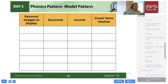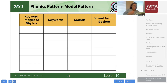Today we are reviewing how to read and spell words with the AI, AY, OI, OY, AU, and AW vowel team patterns. The letters Y and W become part of a vowel team when they team up with vowels A or O. Words with the vowel team pattern have — repeat with me — two or more letters side by side that are pronounced as one vowel sound.